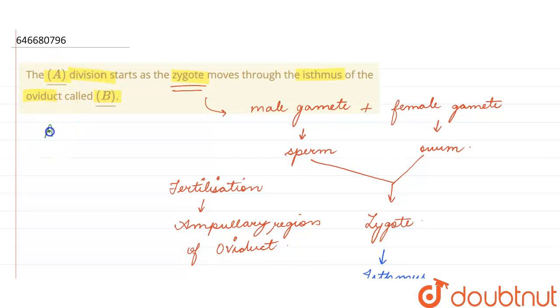So it will undergo various types of divisions. So here our A will be the mitotic division starts as zygote moves to the isthmus of the oviduct called, and B is cleavage.